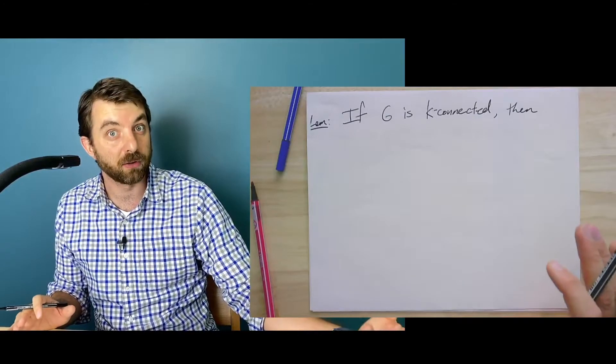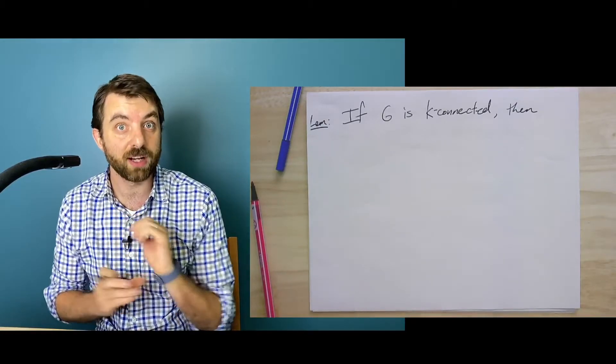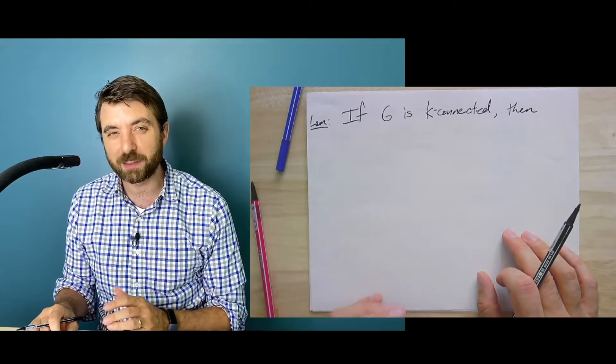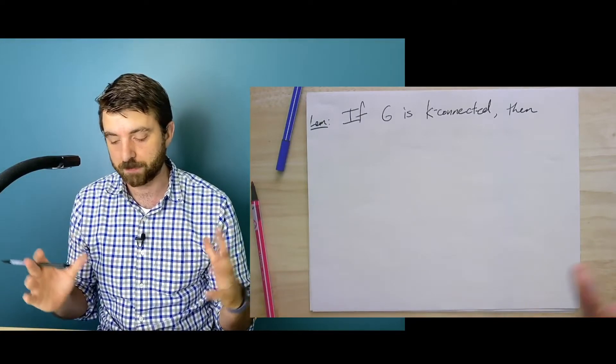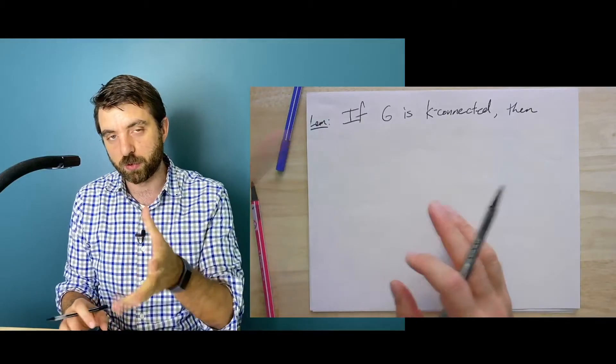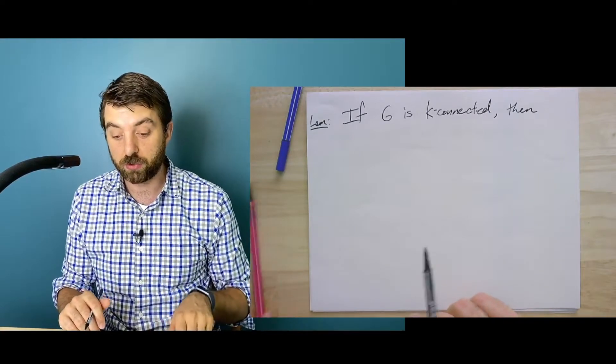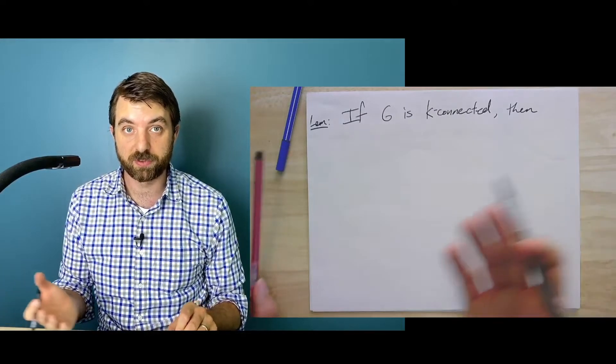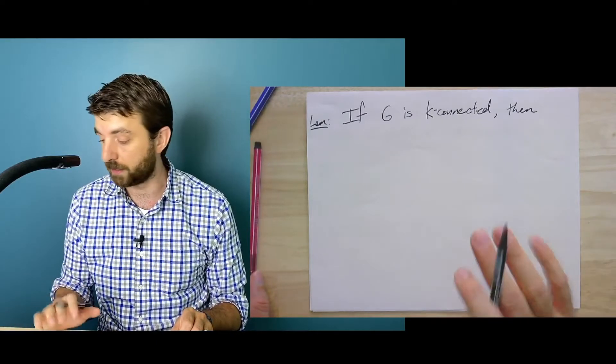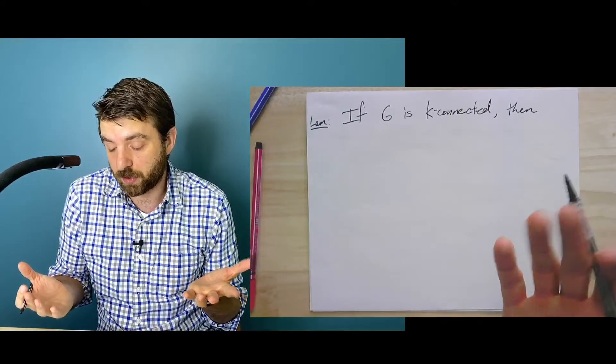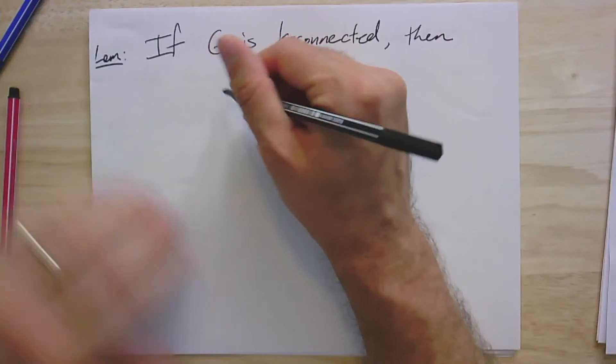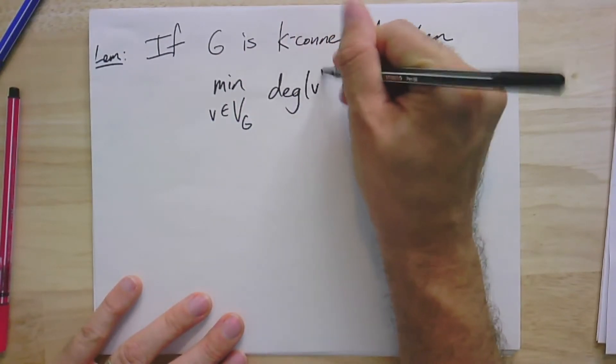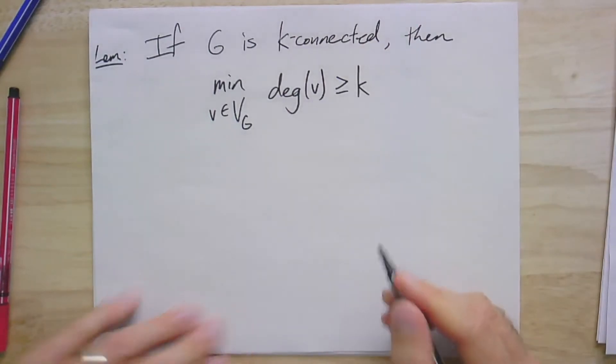We actually used a fact about K connected graphs implicitly in that last exercise, but we can write it down explicitly, and I'm going to write it here as a lemma. It has to do with the degrees of the vertices. You see, one easy way to separate out the graph into more than one piece is to get one vertex to be isolated, in which case you would remove all of its neighbors. So, it has to be the case, then, that if G is K connected, then the minimum overall vertices in the graph of the degree of V is greater than or equal to K.